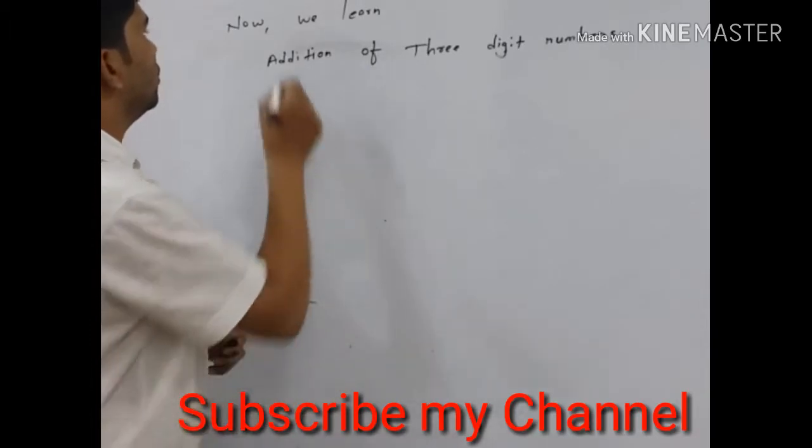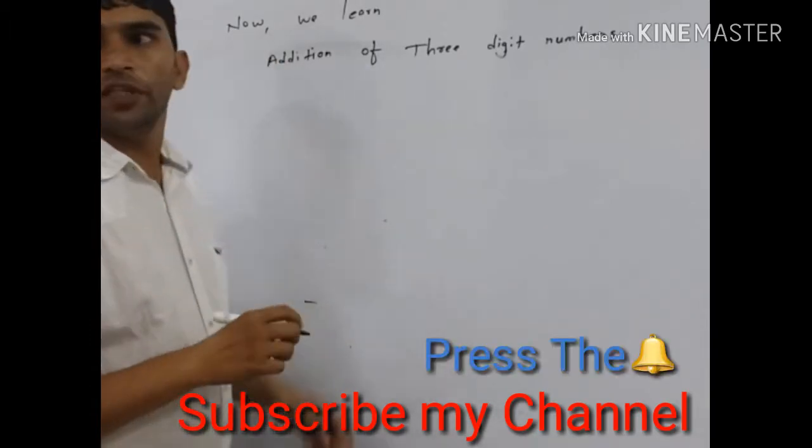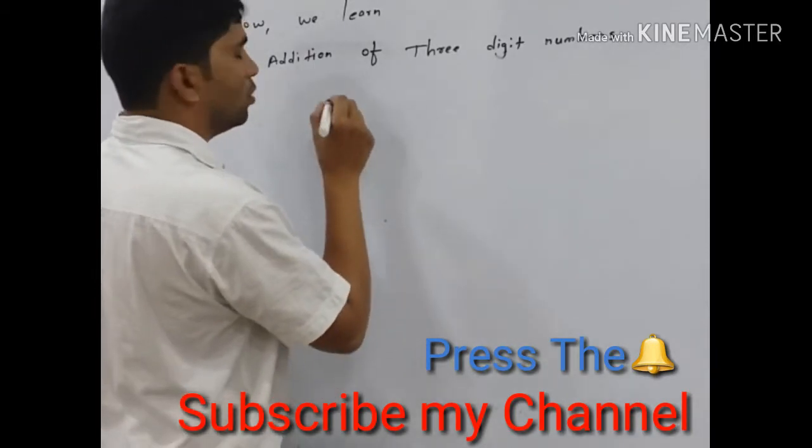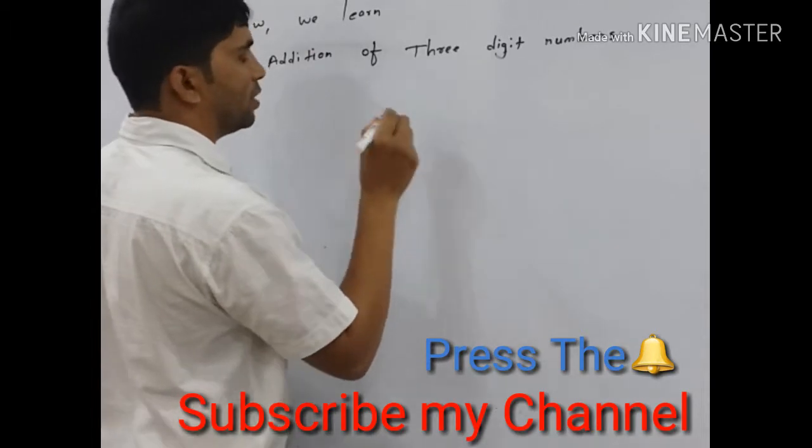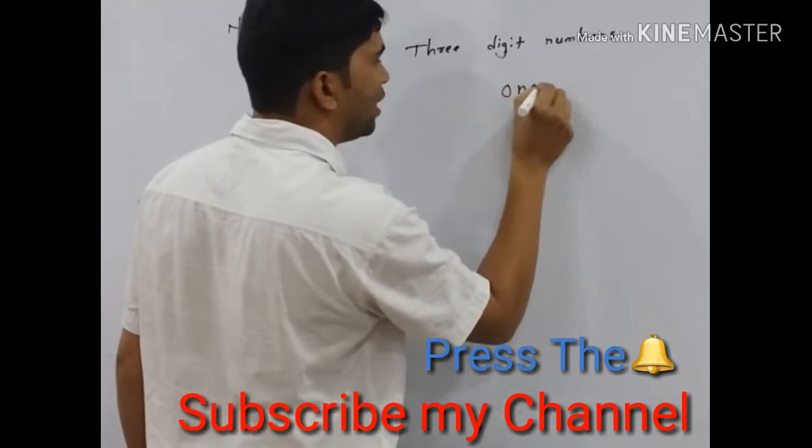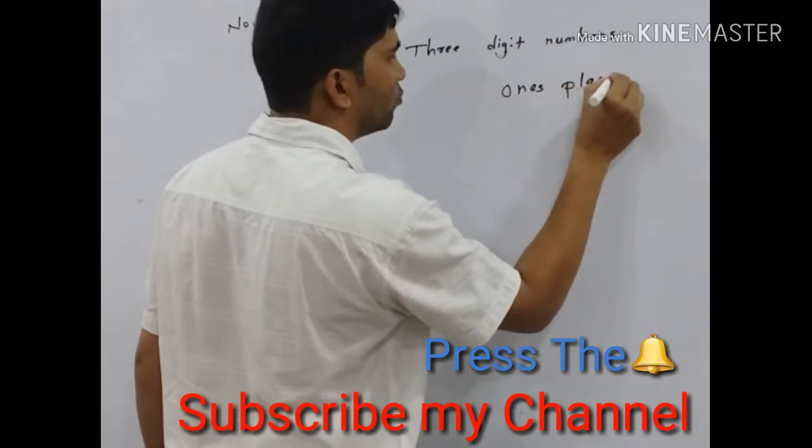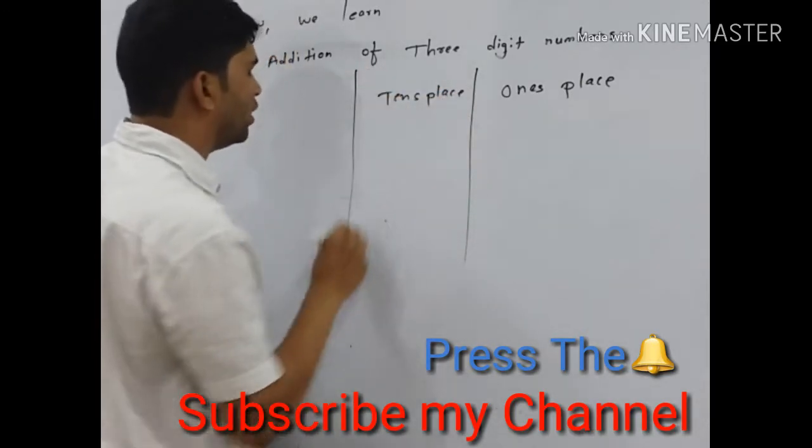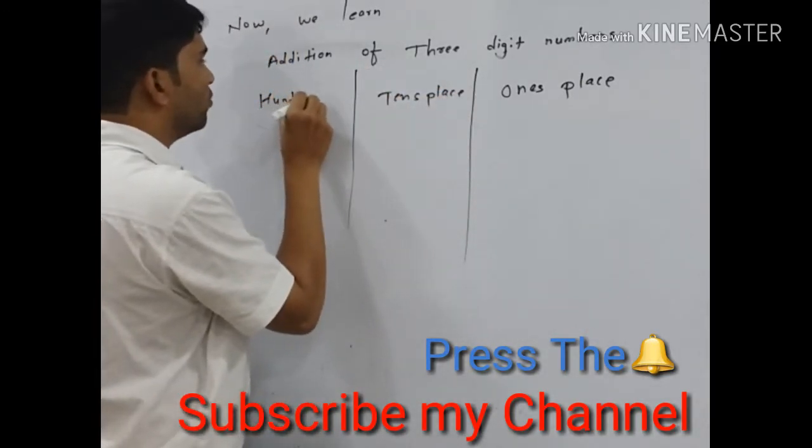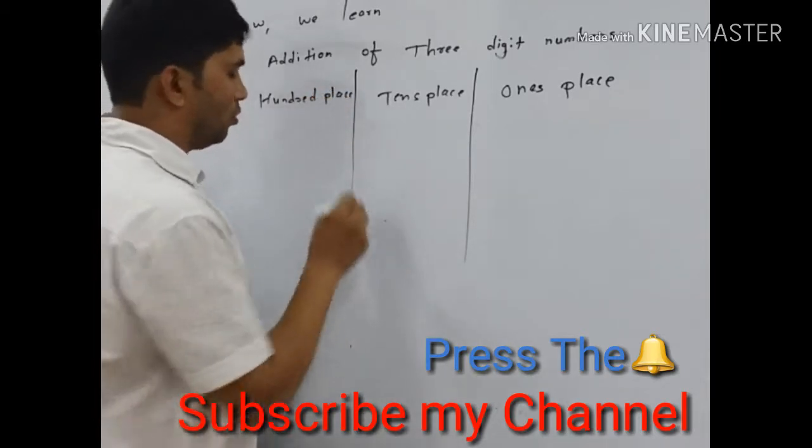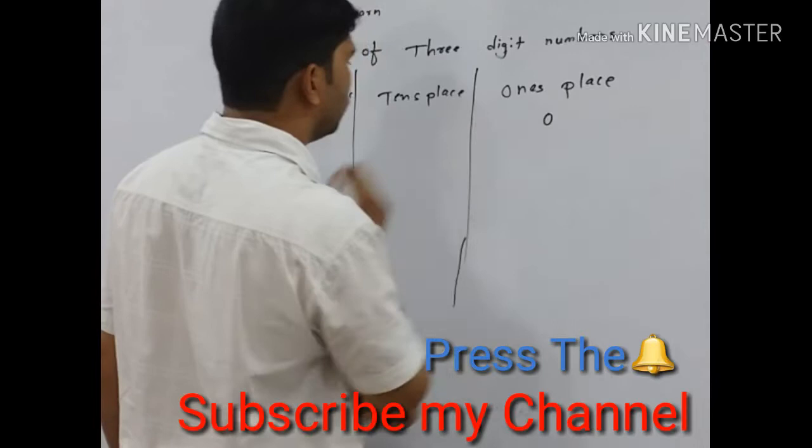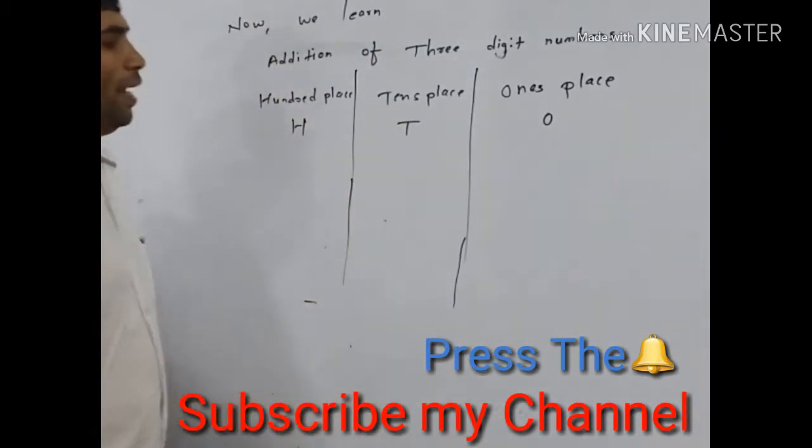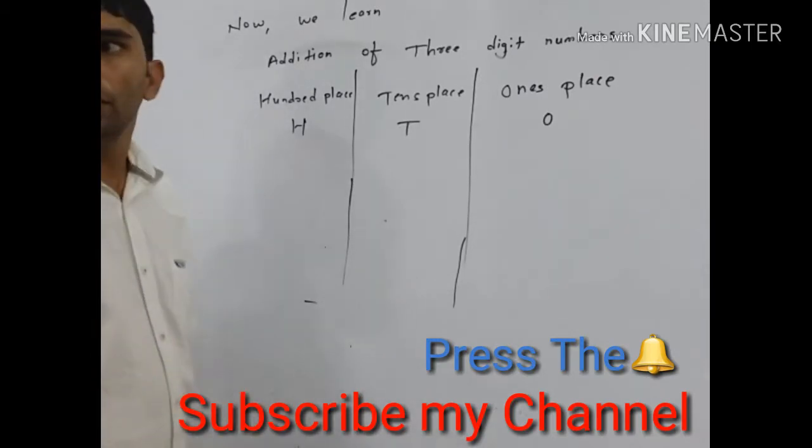Let's learn addition of three digit numbers. In three digit numbers we have three places. That is one's place, ten's place, then hundred place. One's place we denote O, ten's place we denote T, and hundredth place we denote H.